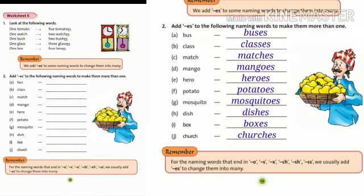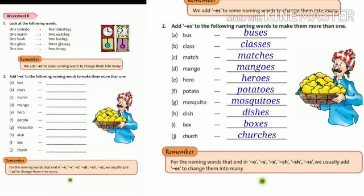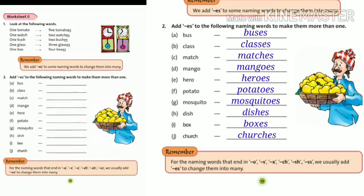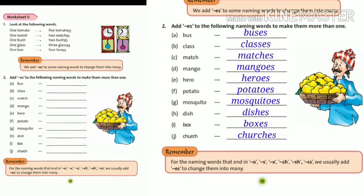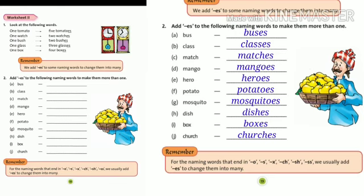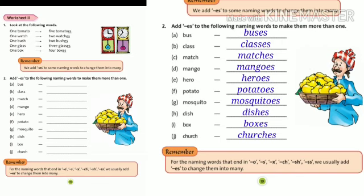So, here is your exercise. First, bus. And your answer is buses. Class. And the plural of class is classes. Match - matches. Mango - mangoes. Hero - heroes. Potato - potatoes. Mosquito - mosquitoes. Dish - dishes. Box - boxes. Church. And plural of church is churches.